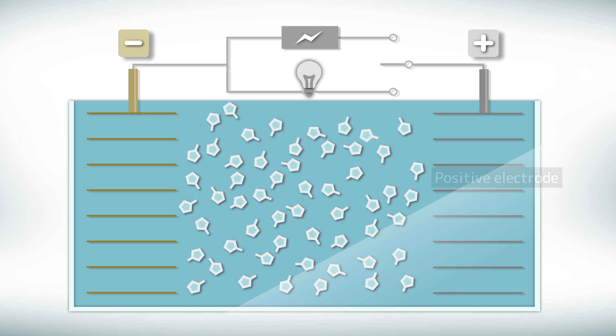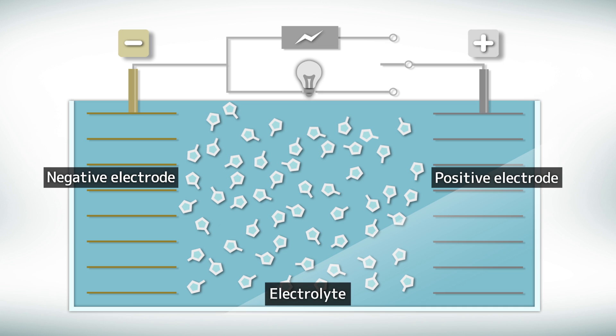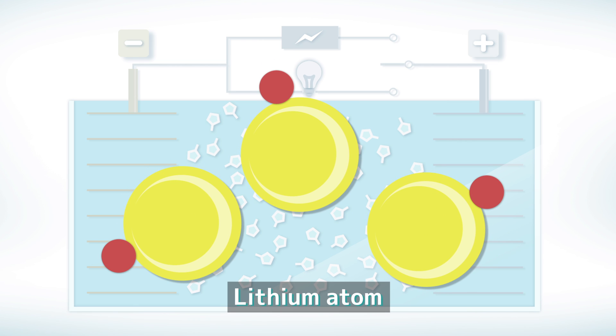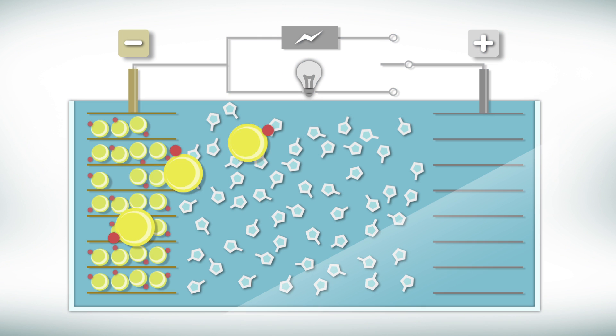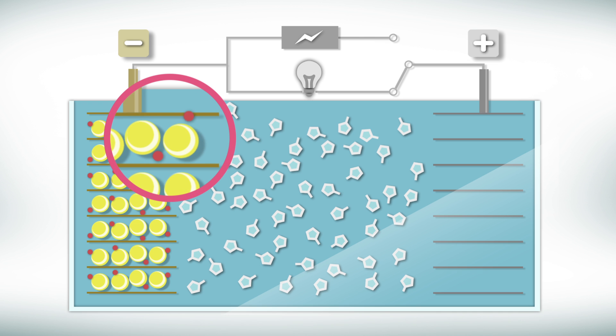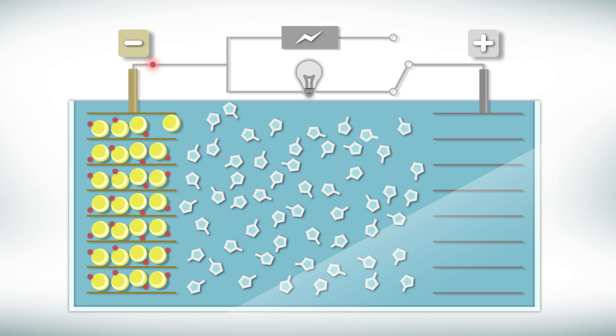A lithium-ion battery is composed of positive and negative electrodes immersed in an electrolyte. Let's take a look at the key actor, the lithium atom. When the battery is switched on, each lithium atom loses an electron and becomes an ion. The electrons flow from the negative to the positive electrode, generating electricity.